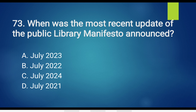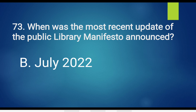Question No. 73. When was the most recent update of the public library manifesto announced? Option A. July 2023. Option B. July 2022. Option C. July 2024. Option D. July 2021. The answer is Option B. July 2022.